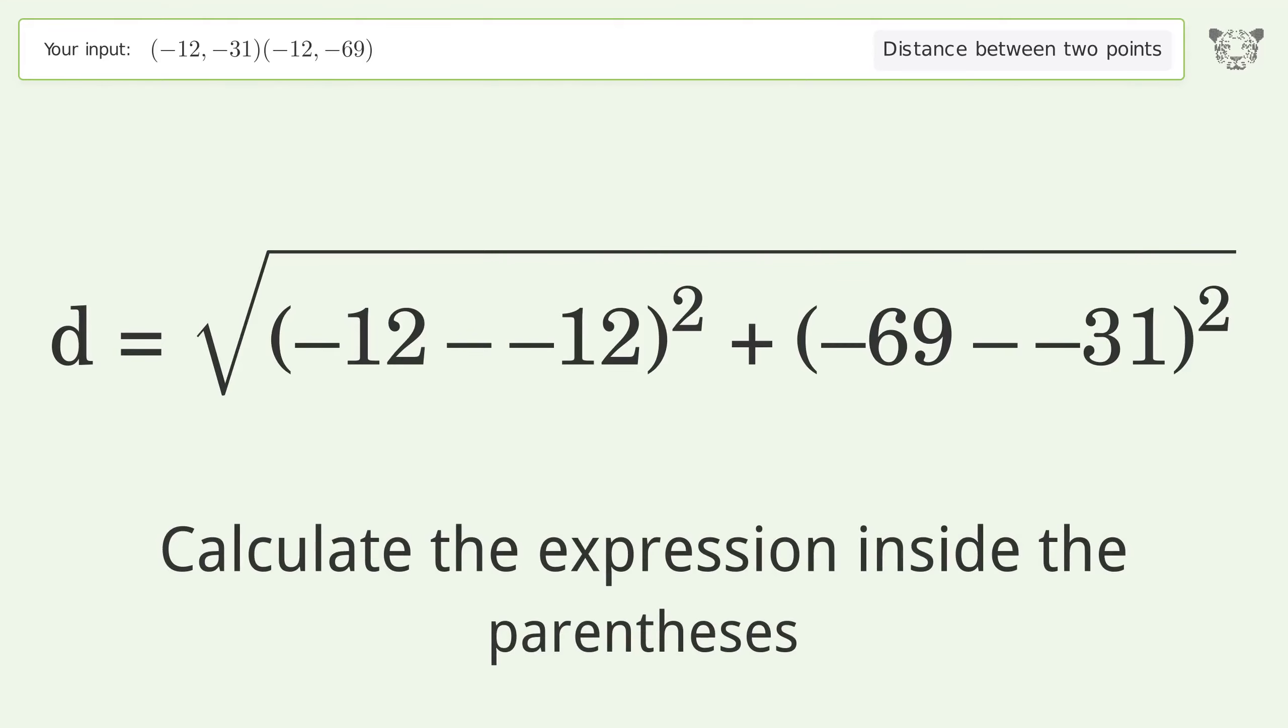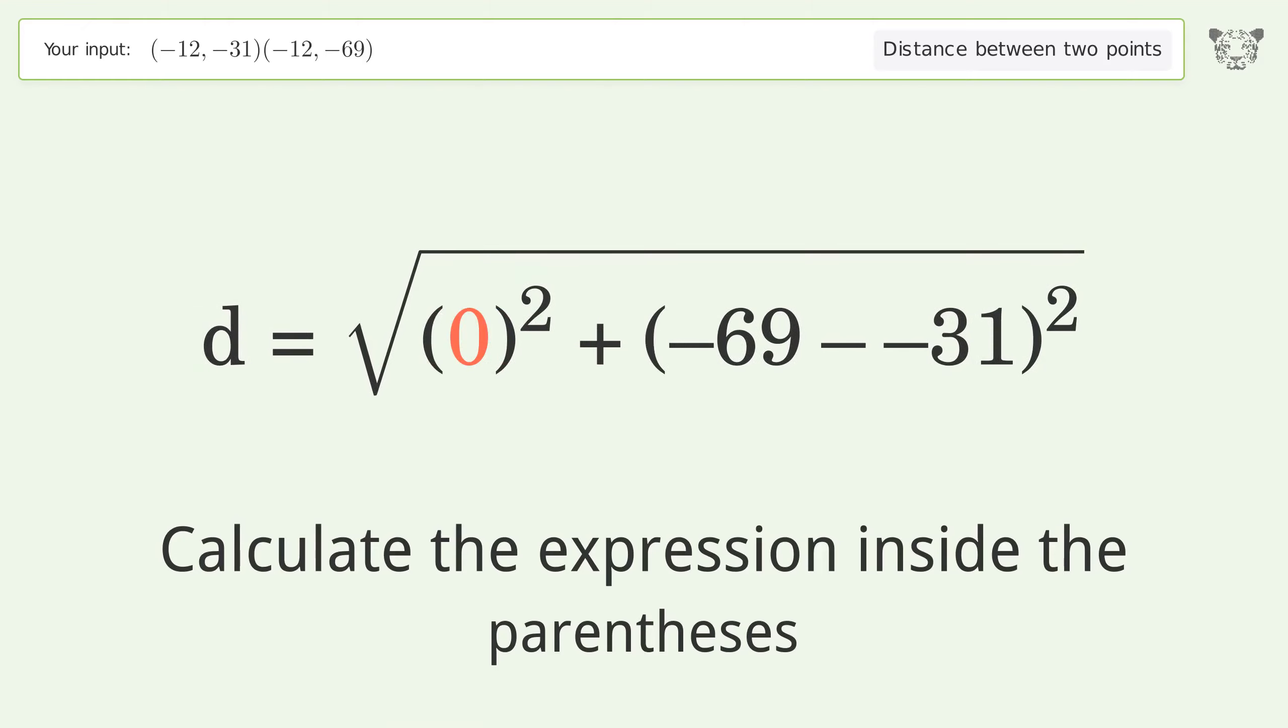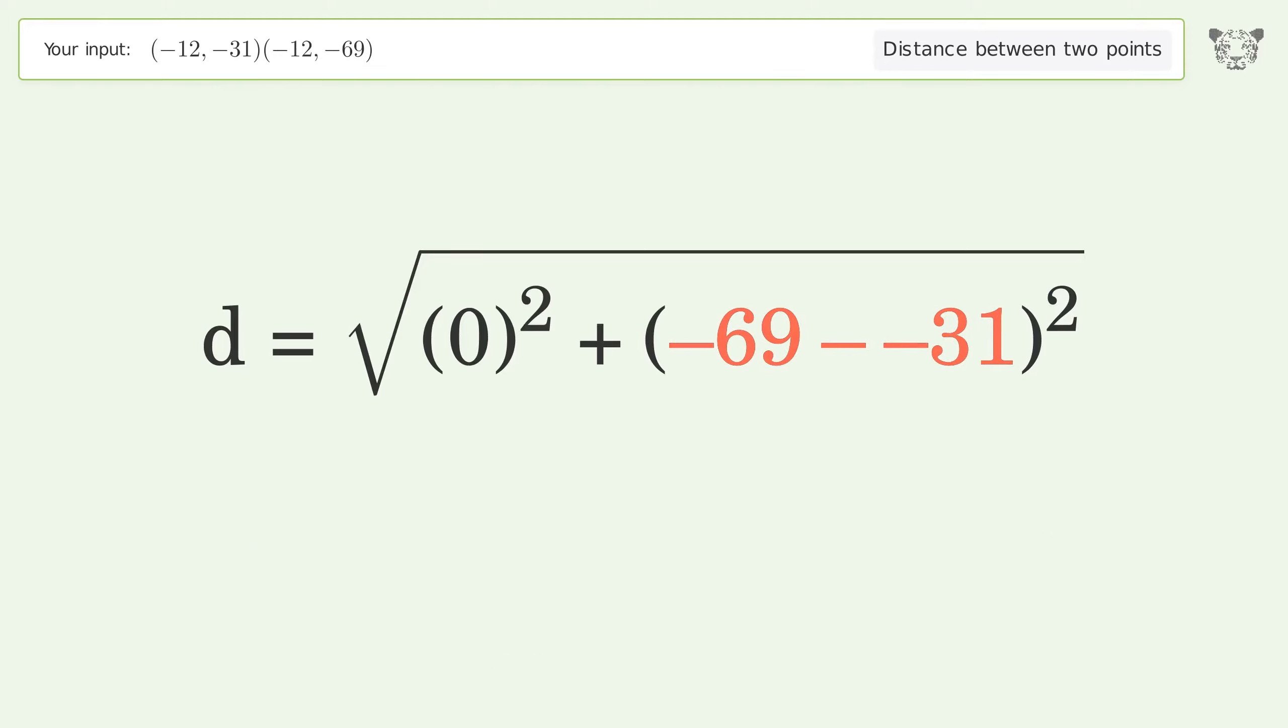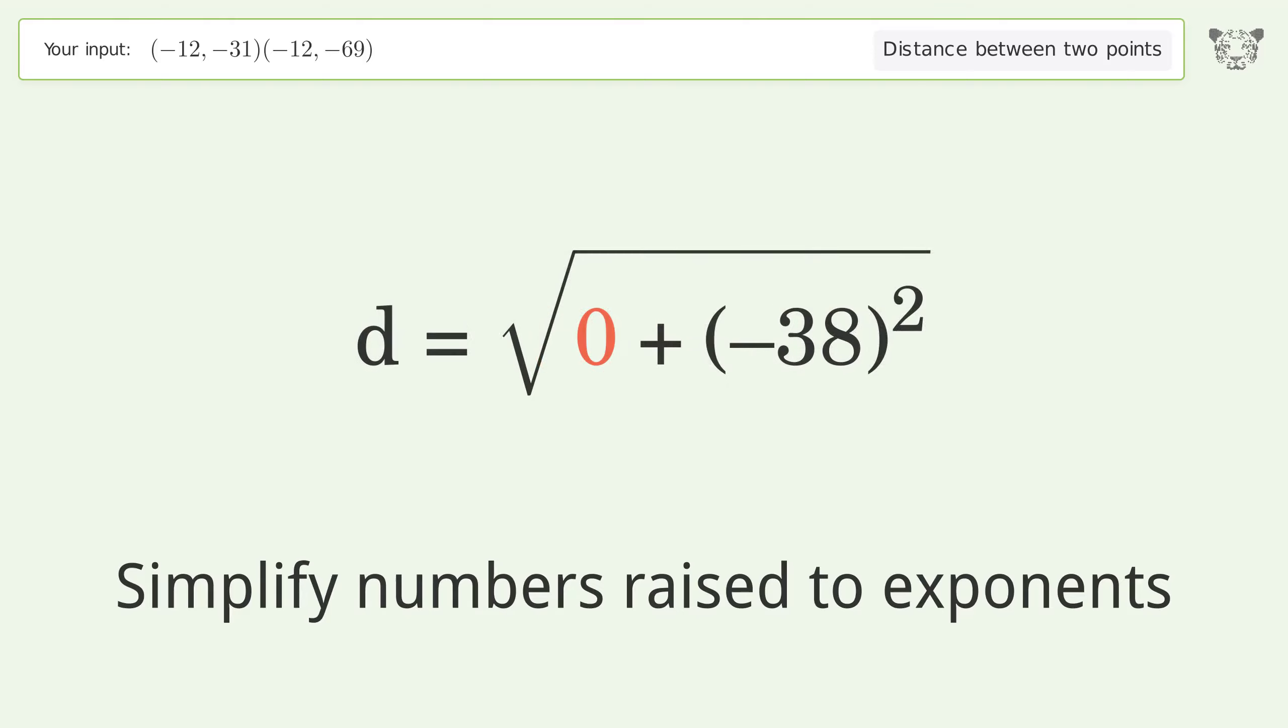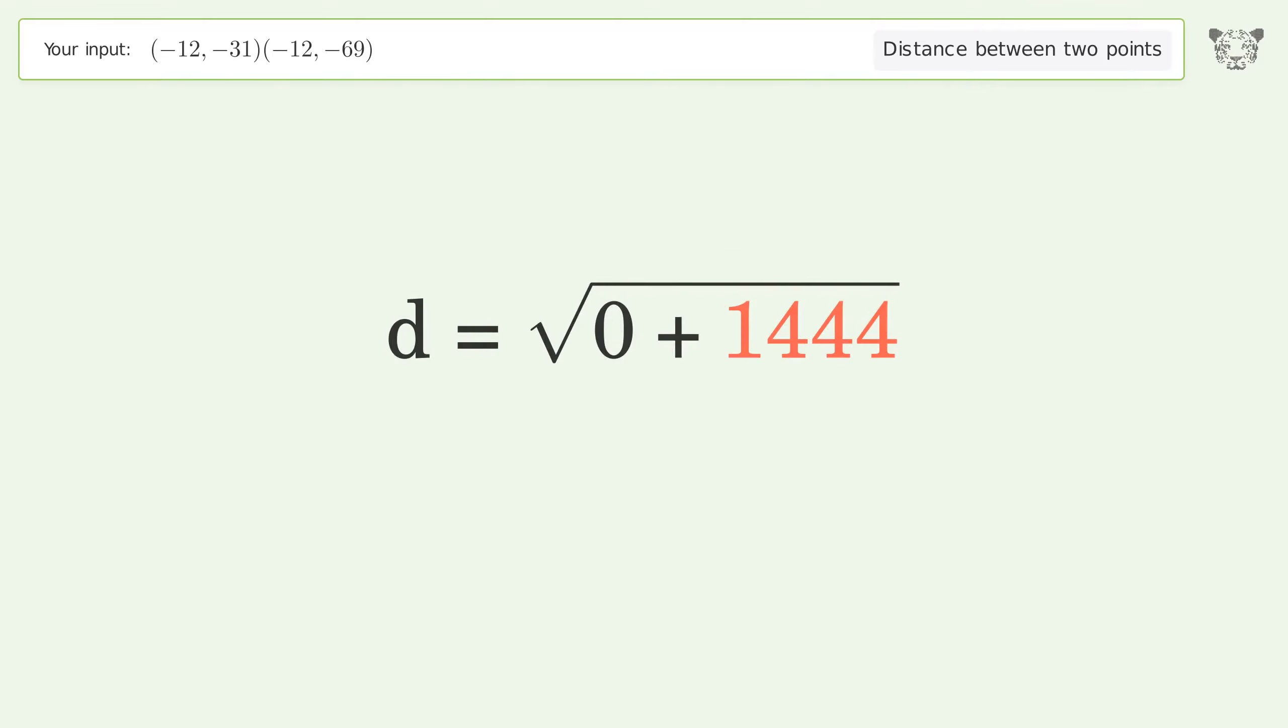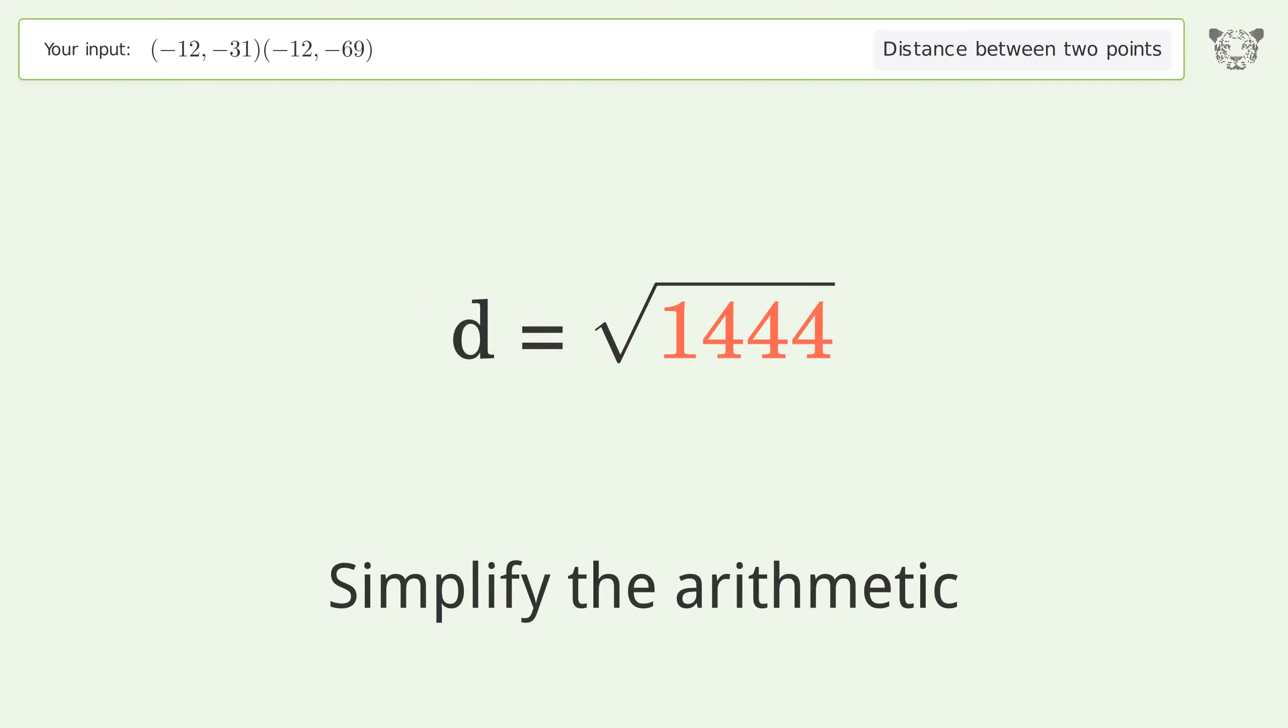Calculate the expression inside the parentheses. And so the distance between the two points is the square root of 1,444, or 38.